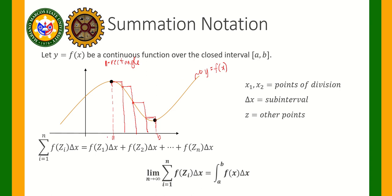Let's say a is equal to x sub 0. So a is equal to x sub 0. This will be x sub 1, x sub 2, x sub 3, and b is equal to x sub n. Now, the height of each rectangle — the height of rectangle 1 is here, for the second one here, the third one here, and for the fourth one here.